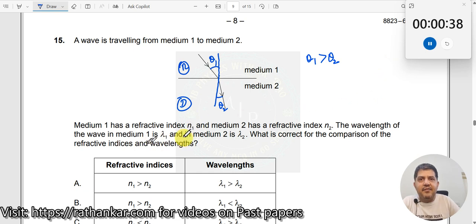Medium 1 has a refractive index n1 and 2 has a refractive index n2, which clearly means that n1 should be less than n2. Denser medium will have a larger refractive index. The wavelength of the wave in medium 1 is lambda 1 and in medium 2 is lambda 2.